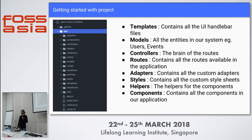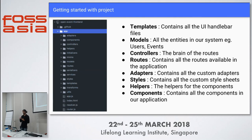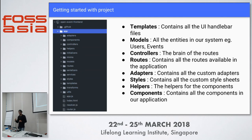Controllers are basically the brains behind the routes — everything that needs to be done inside a route is handled inside the controller. Data is fetched on the route, then the action is passed to the controller which takes care of everything. Next, we have multiple routes — for example, app/homepage, app/events, app/event/:id — and every route is added to the router.js when created.